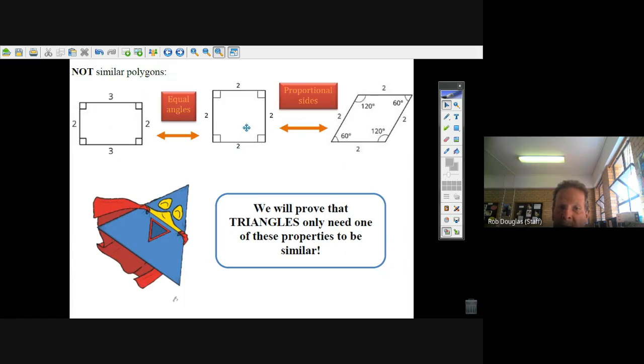But triangles are special because if you have either their angles are equal or their sides are proportional, they're going to be similar triangles. Either one will work, and that's I think where I want to leave it in the first video there.